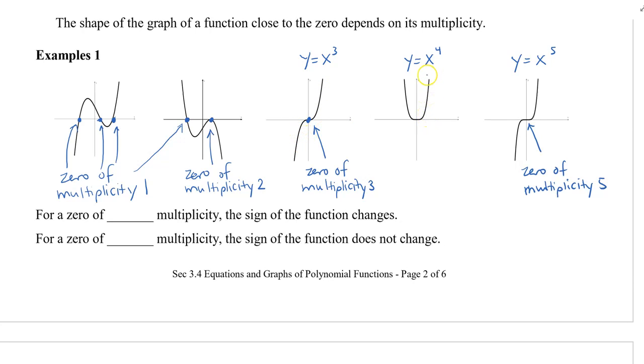Now in the fourth one where it's x to the power of four, notice how this looks like a parabola but it's quite a bit flatter on the bottom here where the zero is. So this is a zero of multiplicity four.